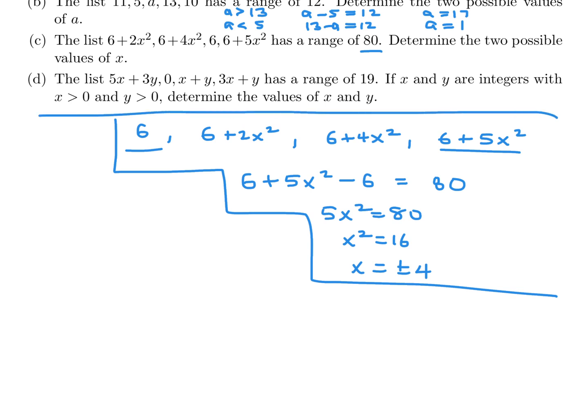And finally, we've got the list 5x plus 3y, 0, x plus y, 3x plus y has a range of 19. If x and y are integers with x greater than 0 and y greater than 0, determine the values of x and y. So again, I'm going to list them in what I believe is ascending order. x plus y. The fact that they're both positive helps me a lot because I can conclude very quickly that this is the ascending order going from smallest to biggest.